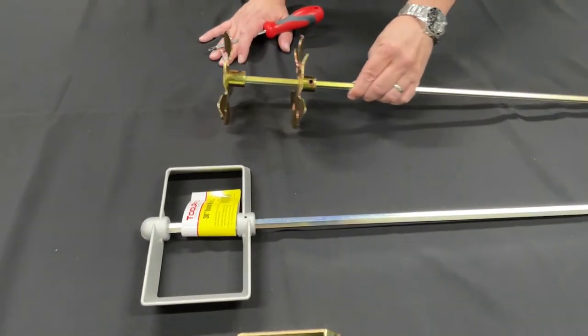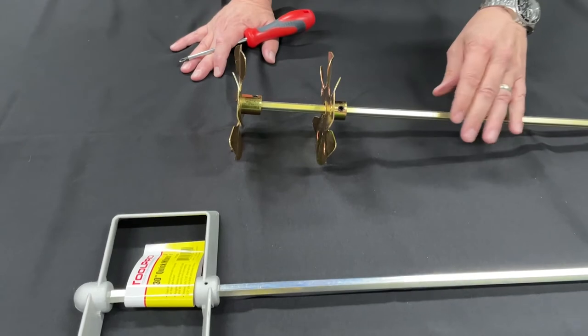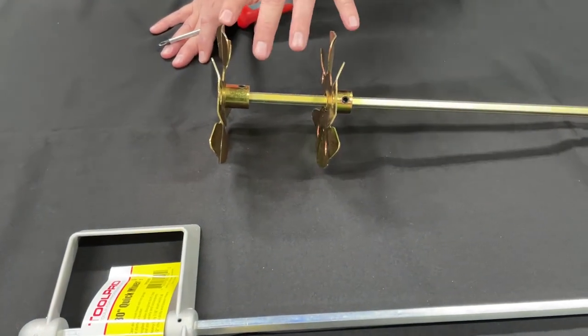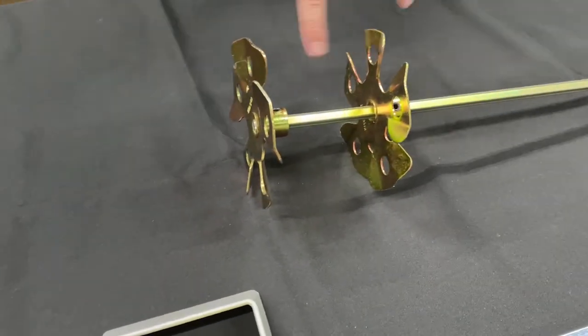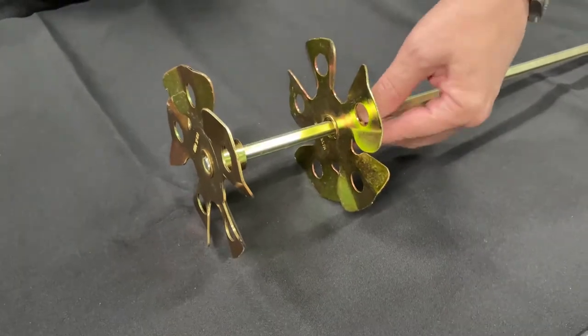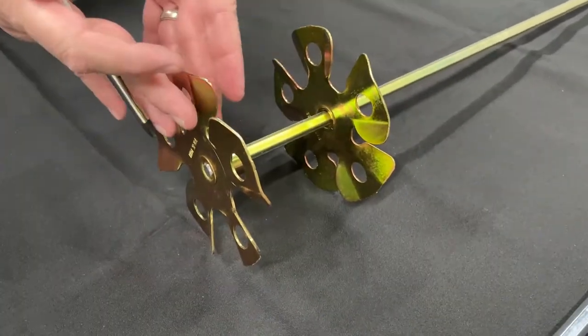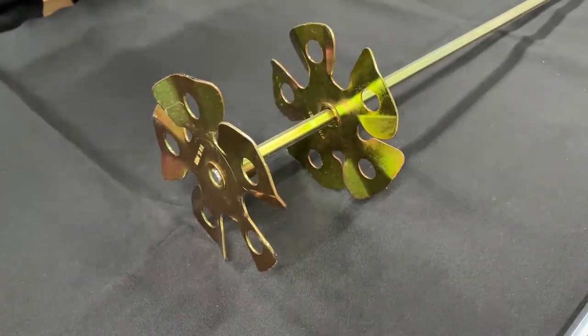This is a Jiffler mixer. This is on a 24 inch, 3/8 inch steel shaft. This has two fan blades. What these are designed to do, and you can use a hex screw to adjust the distance, these create a very high mixing action inside the bucket.